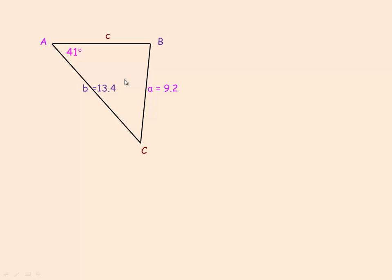Let's look at one more example using the second triangle from the first page — where we previously found angle B. Now suppose you're asked to find side C or angle C instead. You cannot find side C using the cosine law, because although you know the other two sides, you don't know the angle opposite it. And you can't use the sine law to find that side either, because you'd need the angle opposite it — which you don't have.